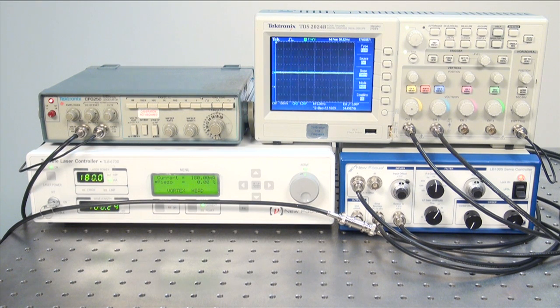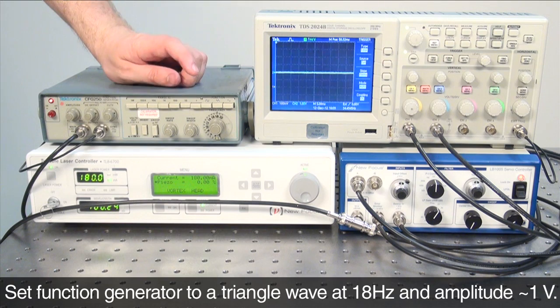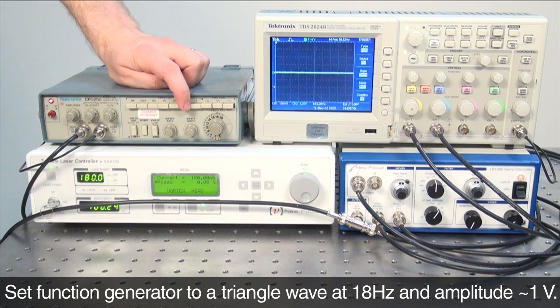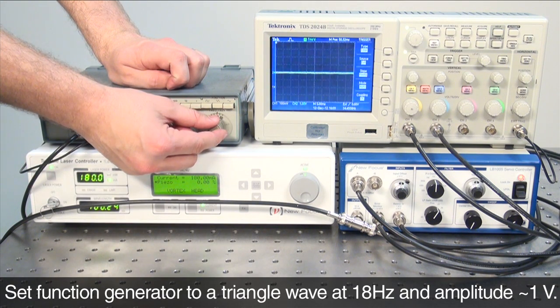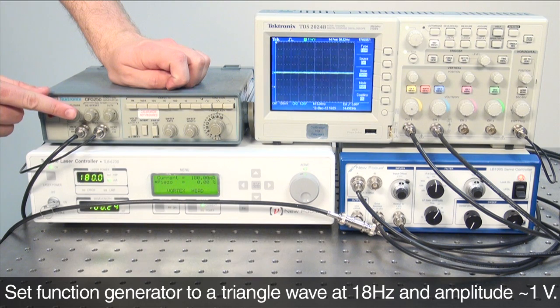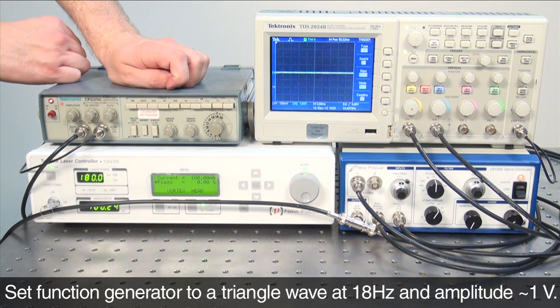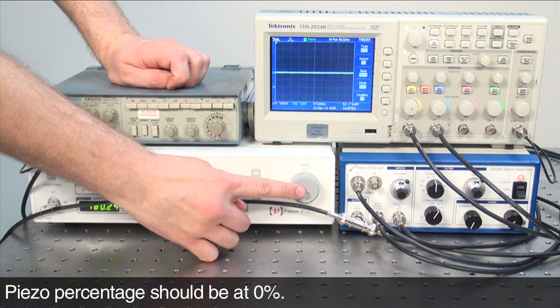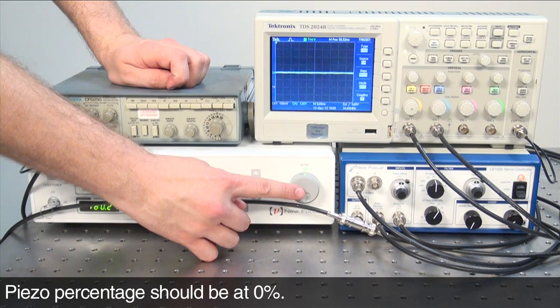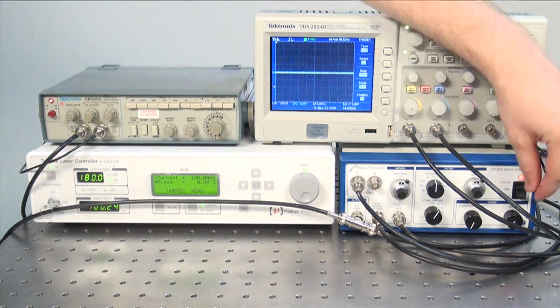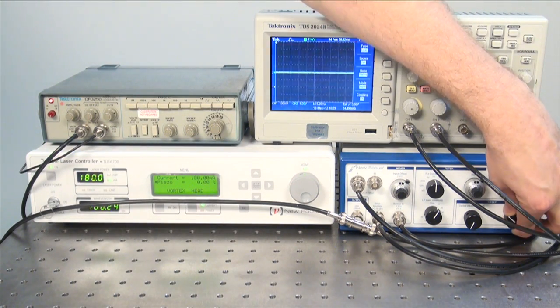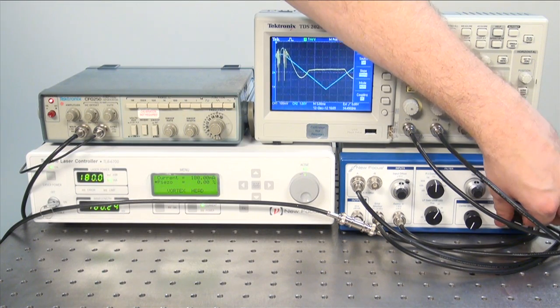Now, we will set up our system to find the rubidium absorption line. Set your function generator to a triangle wave at 18 Hz with an amplitude of about 1 volt. Your piezo percentage should be at 0%. Now, turn the span knob until you see your triangle wave on the oscilloscope.